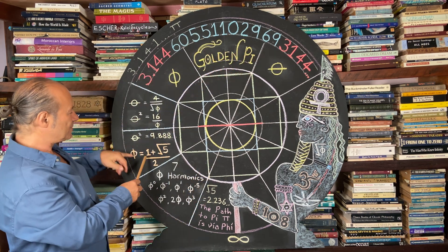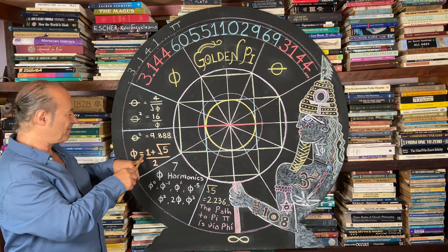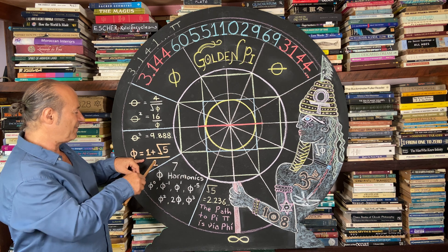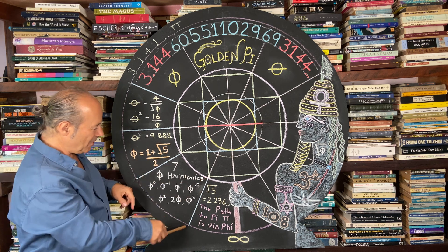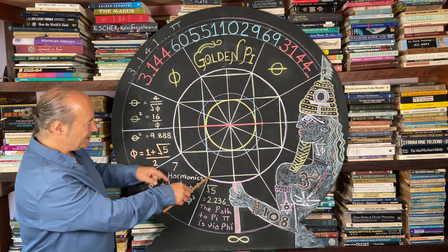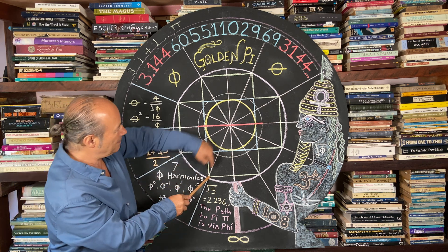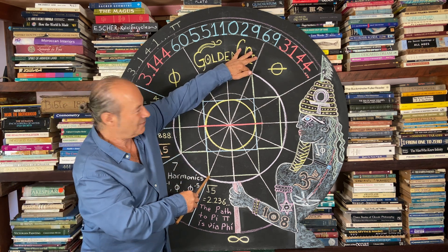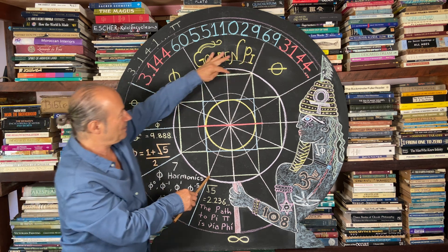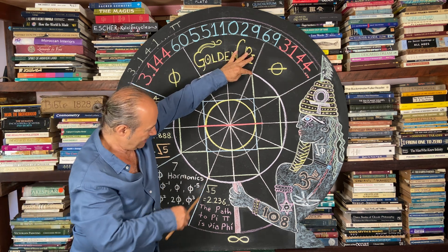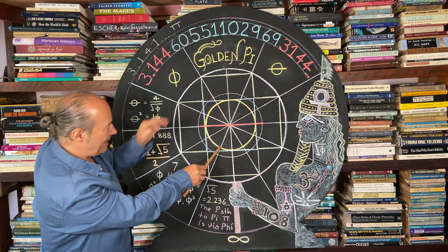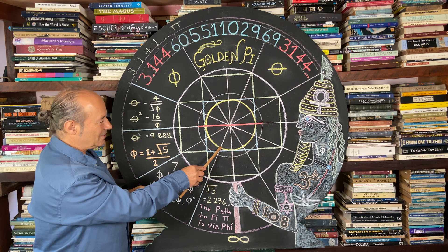We want to convert or translate this ancient formula — the pin code to the universe — which is 1 plus root 5 divided by 2. These blue lines here: if this is 1, we're going to add root 5 to this distance. So 1 plus the root 5, the diagonal of the double square. The formula says we have to divide by 2, so if I take this distance, the midpoint happens to be right there on that yellow circle.